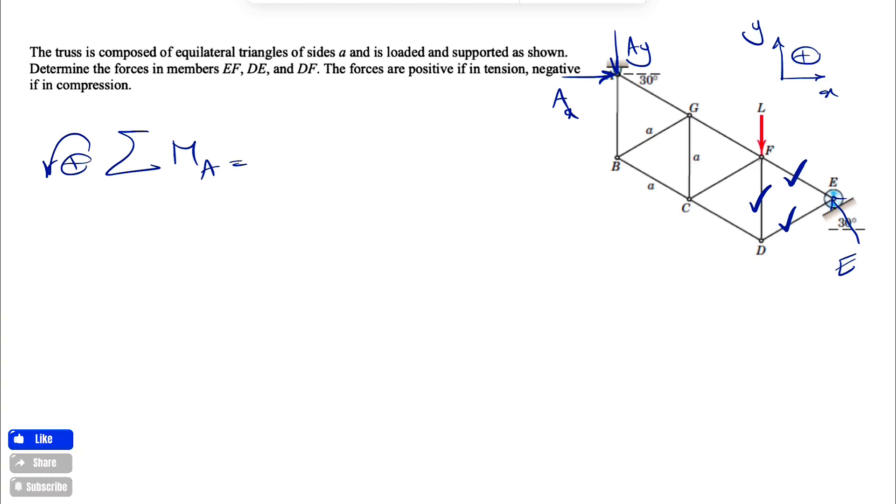And if we do that, what we're going to have is the moment of the L, as we can see, that's going to be in this direction, so negative moment for that. The force is what we have as L, and the distance that we are interested in here is the vertical distance from A to the line of action of this force.